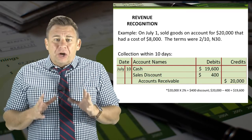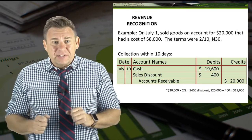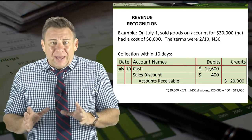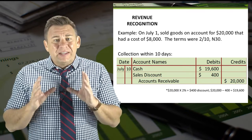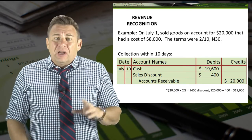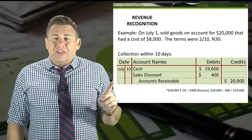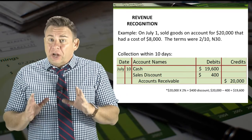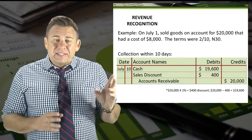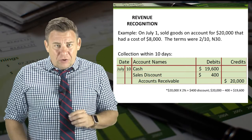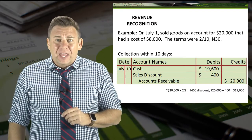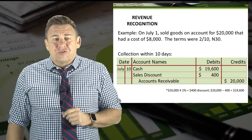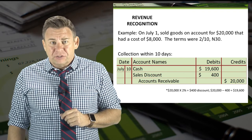If the buyer pays us within the 10 days, then we would debit cash for the discounted amount of $19,600. We would also debit sales discount for $400 and credit accounts receivable for $20,000.